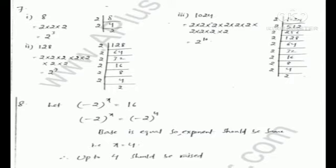In question number 7, we have to write the number as a power of 2. The first part is 8. We find the prime factors of 8, which are 2 into 2 into 2, so we write 8 as 2 raised to the power 3. The second part is 128; when we find the prime factors, there are 7 twos, so we write 128 as 2 raised to the power 7.